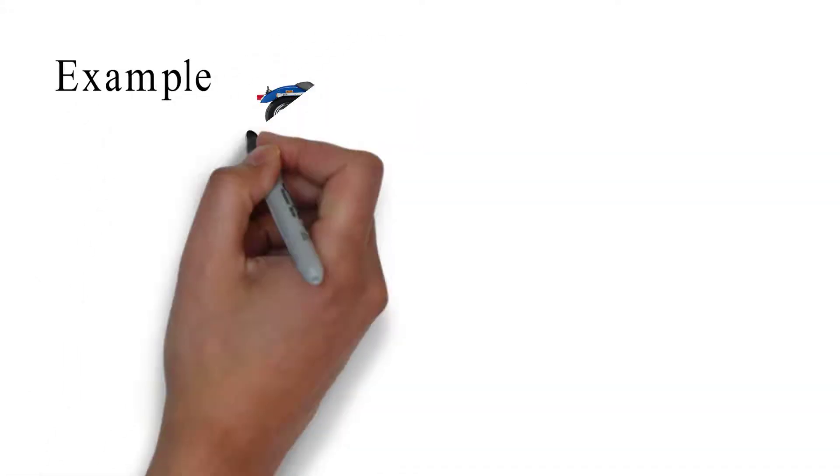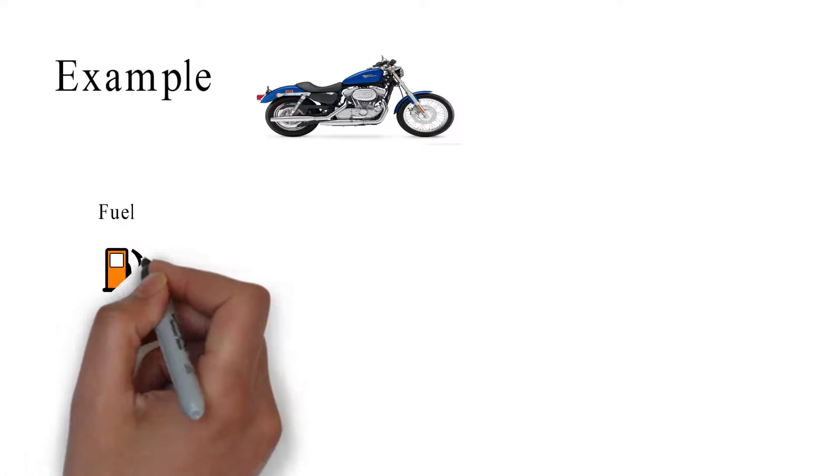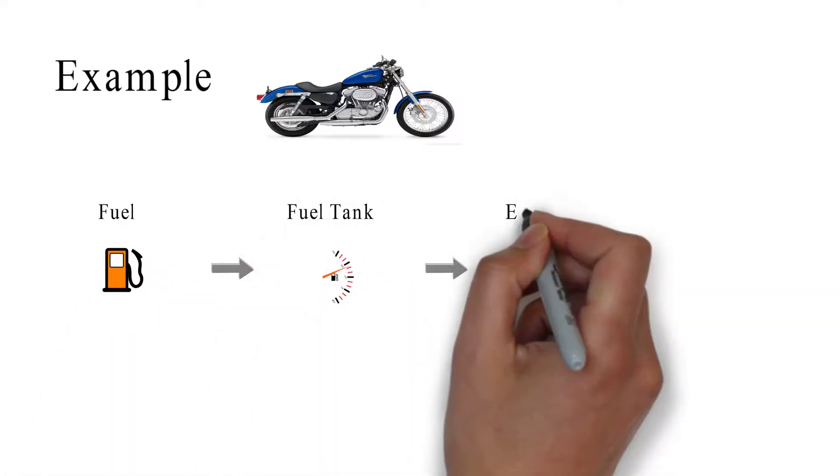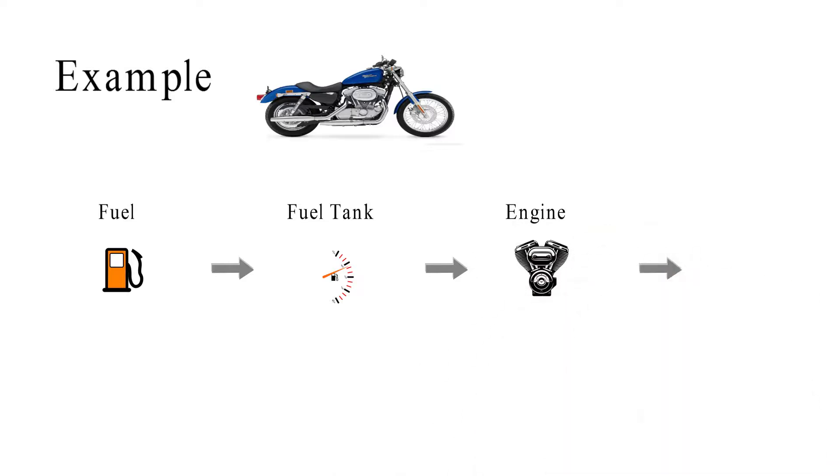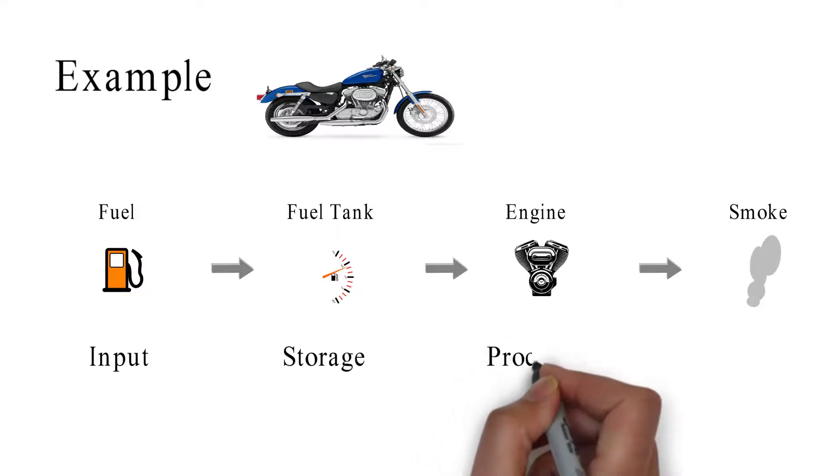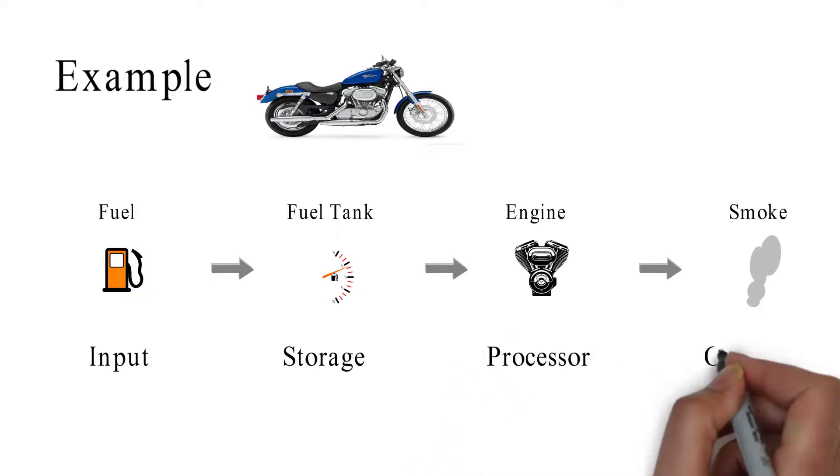Let's understand the concept of computer through a bike example. A bike takes the fuel and stores the fuel in the tank. The engine takes the fuel and oil together and produces smoke. The same way computer works. Here fuel is our input, fuel tank is our storage, engine is our processor, and smoke is the output.